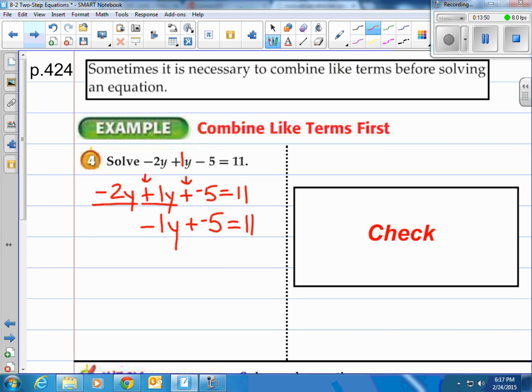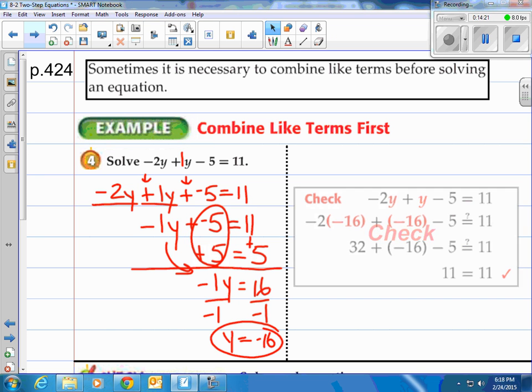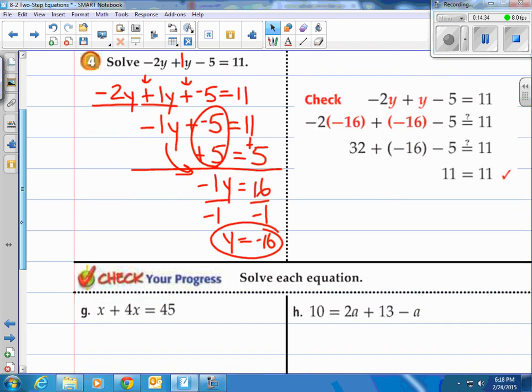Now we've got this math problem. What's the inverse of adding negative 5? Adding 5. So when we add 5 to both sides, negative 5 plus 5 becomes 0. And 11 plus 5 is 16. And then we have negative 1y here. Now we divide both sides by negative 1 to get rid of that negative 1 in front. And y is equal to negative 16. Does that work? Let's take a look at the check. When you plug negative 16 in for the 2y's there, you do your math on the left and you get 11. So negative 16 is the solution to that equation.